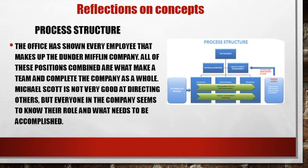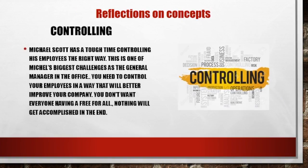Process structure: The Office has shown every employee that makes up Dunder Mifflin. All of the positions combined are what make a team and complete the company as a whole. Michael is not very good at directing others, but everyone in the company seems to know their role and what needs to be accomplished. Controlling: Michael Scott has a tough time controlling his employees the right way. You need to control your employees in a way that will better improve your company, and as seen in the last two episodes, Michael has a very difficult time with this.